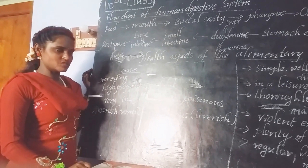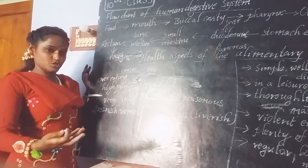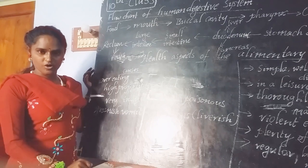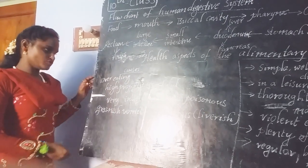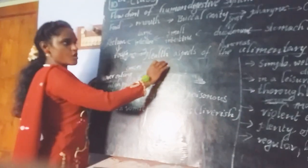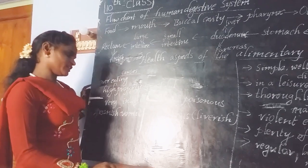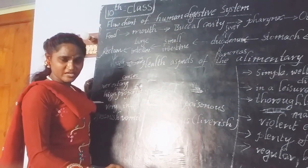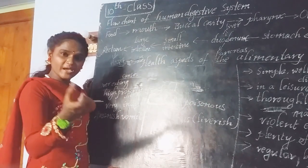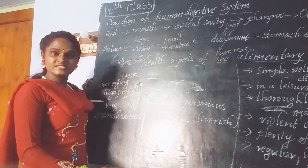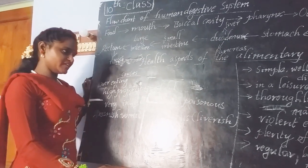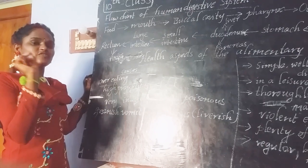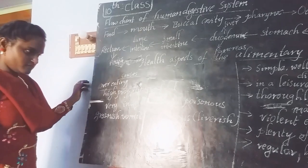What are the causes of these health problems? First is overeating — people who eat more food than required. We have to take only the amount of food sufficient for our body. Overeating causes a lot of health issues to our alimentary canal. Also, taking high proportions of fat — some people prefer only oily foods containing more fat — this is not safe for our digestive system. We have to take fats only in adequate amounts.